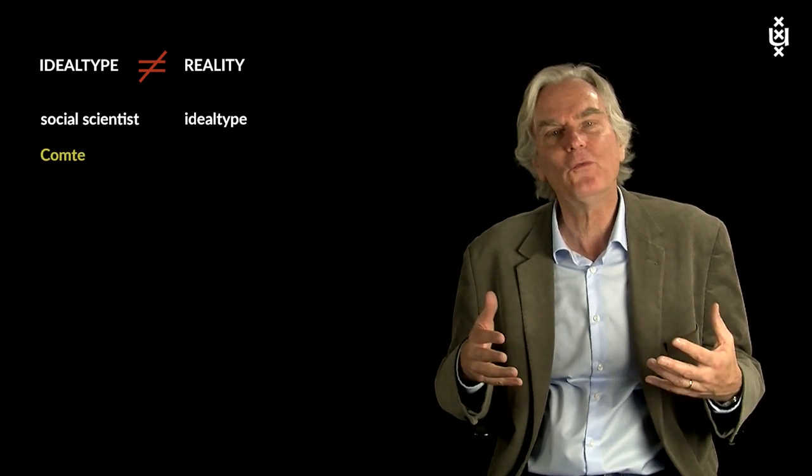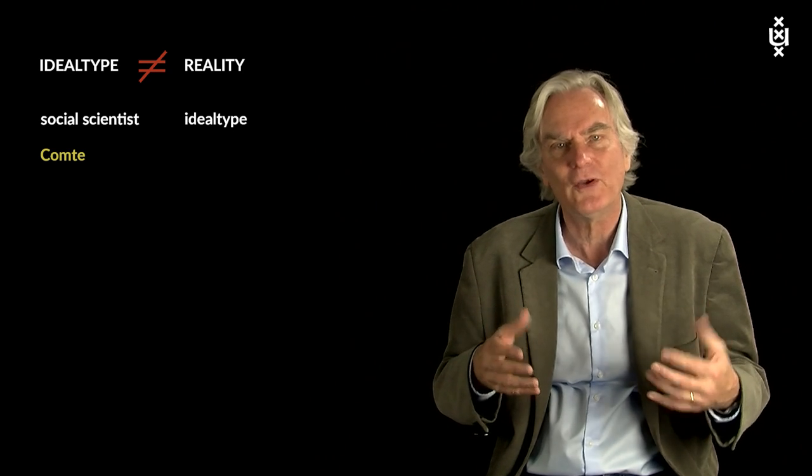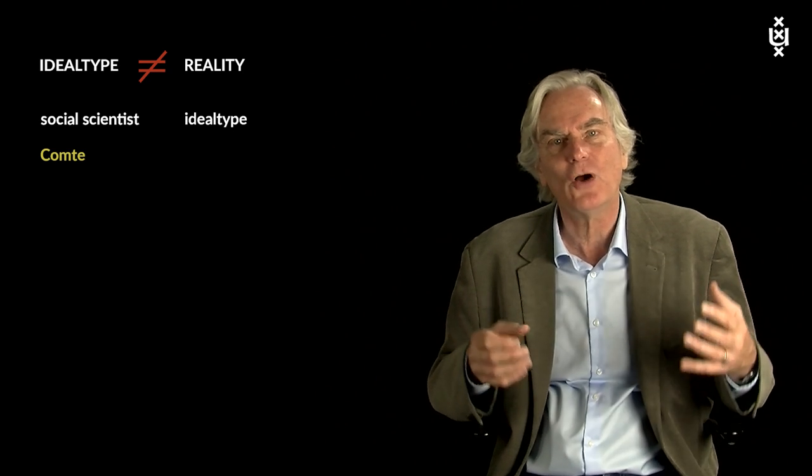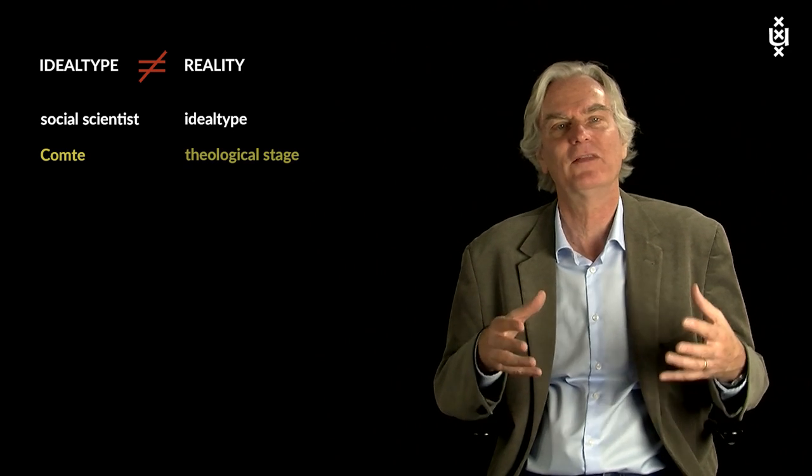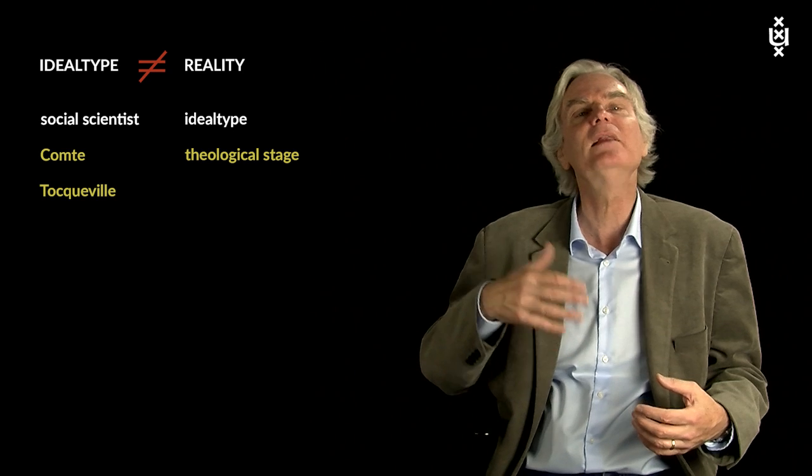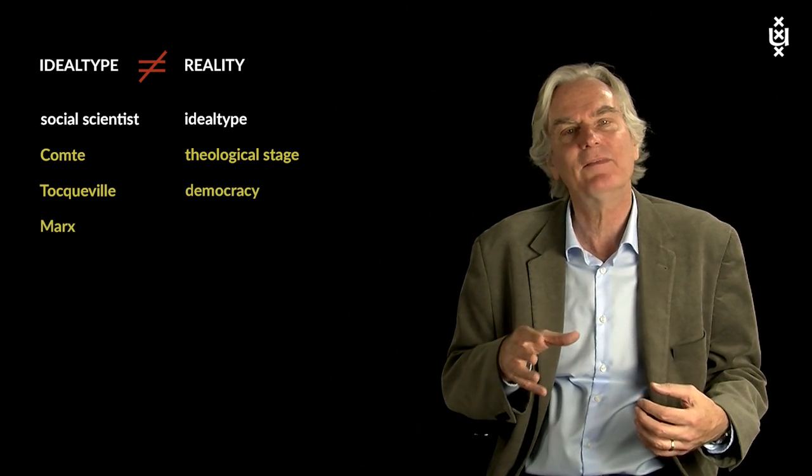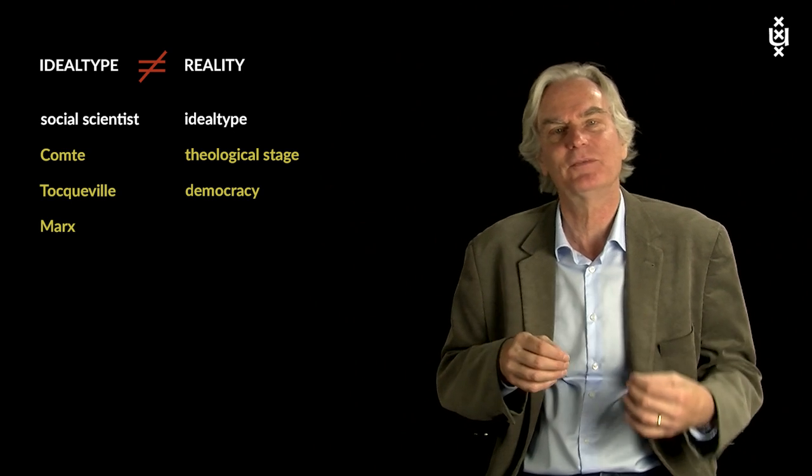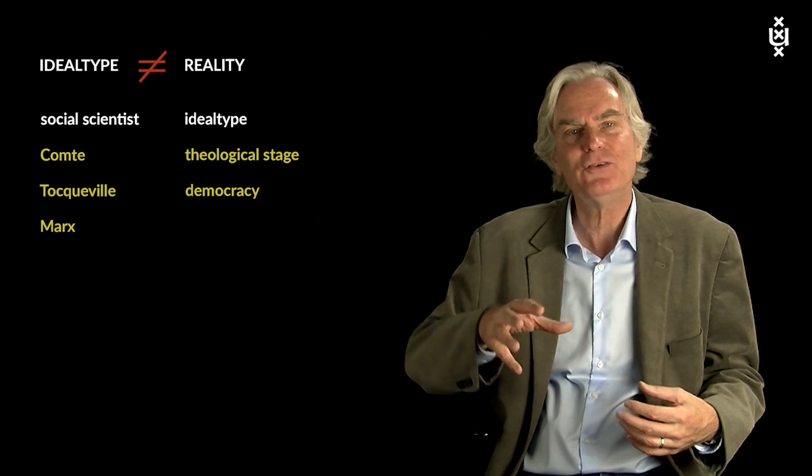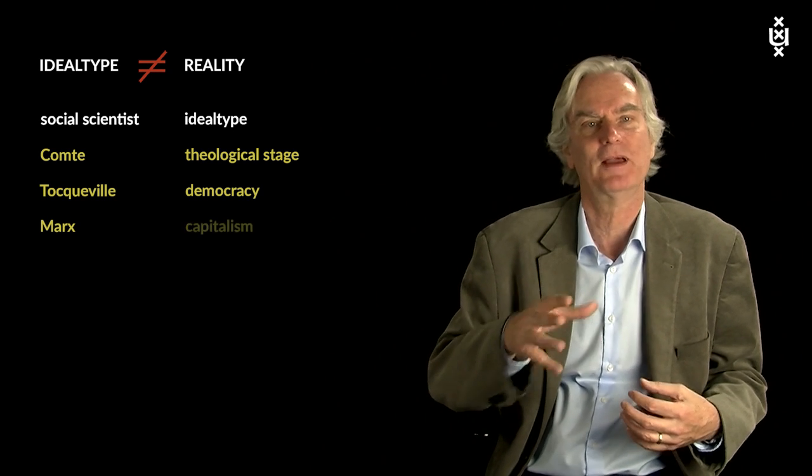For example, Auguste Comte did not describe the theological stage in human thought. He constructed his own ideal type of that theological stage. Tocqueville wrote about an ideal typical democracy. Karl Marx did not analyze the really existing capitalist system. He analyzed his own ideal typical representation of capitalism.